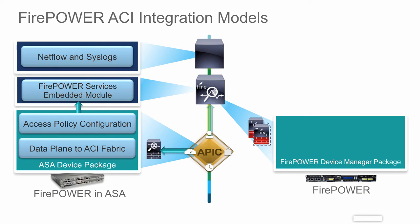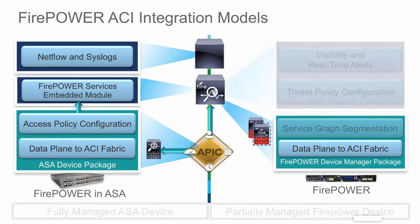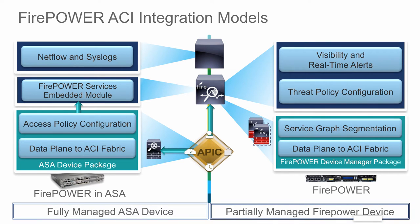On the right side, APIC is leveraging the device manager package for firepower, talking through the management console Firesight to instantiate the data plane and service graph segmentation on the sensors. Once that is done, the full threat policy configuration is done out of band from APIC, only on the Firesight management console. This console then collects all events from the sensors and alerts to give you full visibility. So on the left you have a fully managed ASA by APIC, and on the right, a partially managed firepower device allowing data plane and service graph segmentation to be configured by APIC.